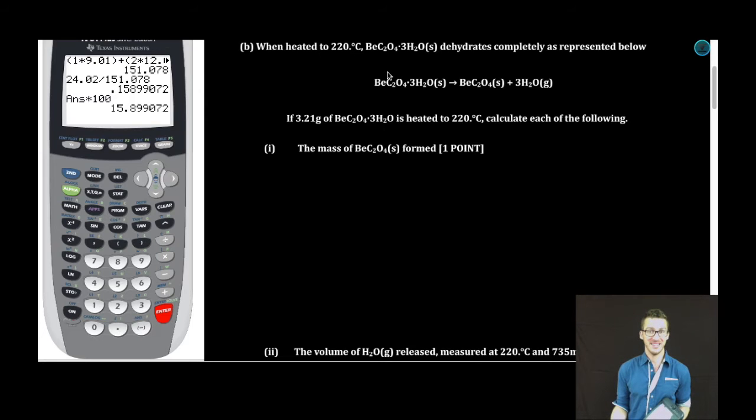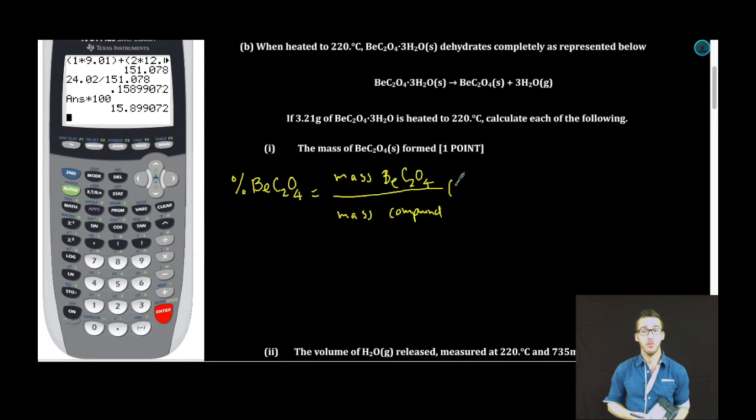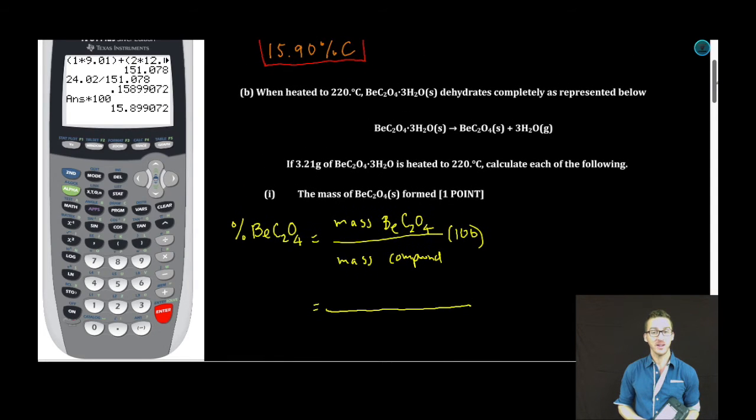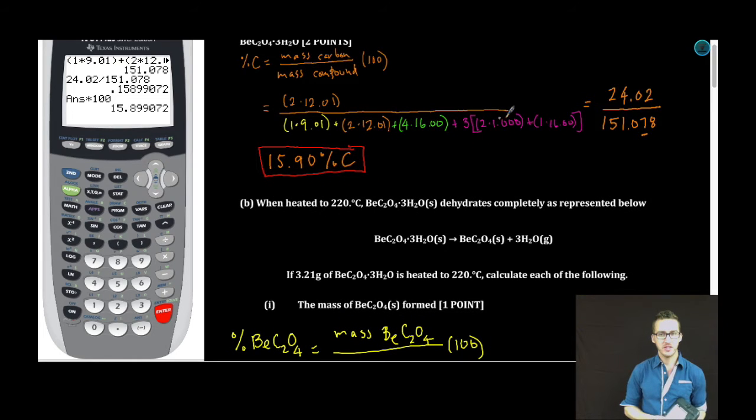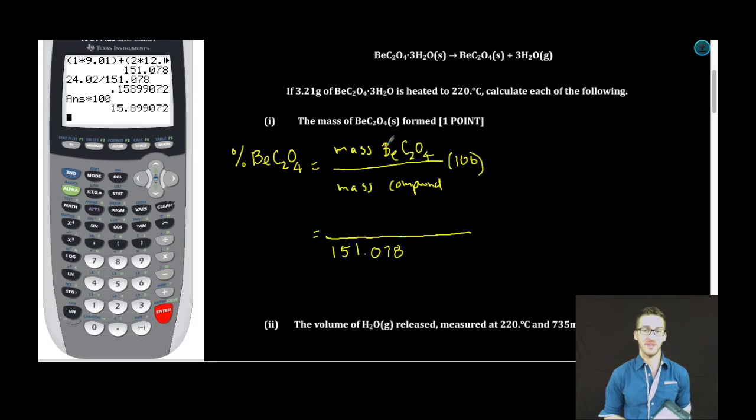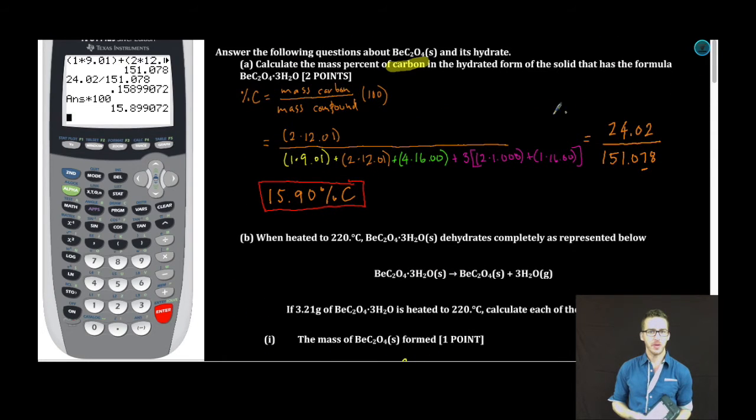So if we can figure out what percent the anhydrous salt or the beryllium oxalate without the water is of this compound, then whatever mass of the hydrated compound we're given, we can simply do a percent composition calculation to figure out the mass of the anhydrous beryllium oxalate. If you're confused, just watch. I'm going to do another percent by mass calculation. Now, I want to know what is the percent of the beryllium oxalate. So just like in part A, I'm going to figure out what is the mass of the beryllium oxalate, put it over the mass of the compound, and then multiply by 100.